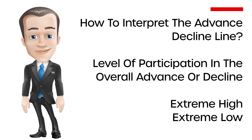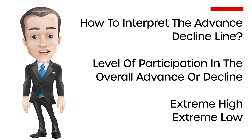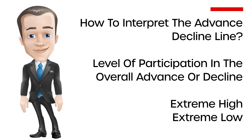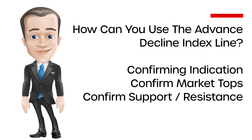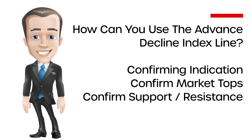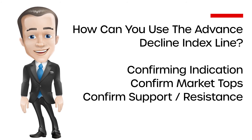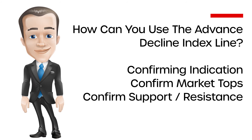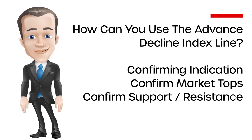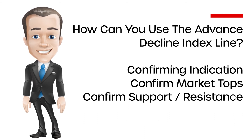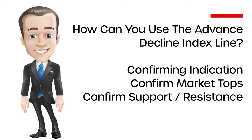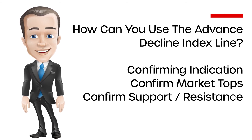Traders should note that the advance-decline line on its own does not offer much value; other factors such as fundamentals and the trend of the security must also be considered. The AD line is not a black box — it must be coupled with other indicators. There are three common uses: confirming strength and validity, detecting reversals or corrections, and confirming market tops based on increasing or decreasing market participation. When a stock posts a high but the AD line is not confirming with high market participation, it signals the highs are driven by just a few participants, increasing the likelihood of a correction.